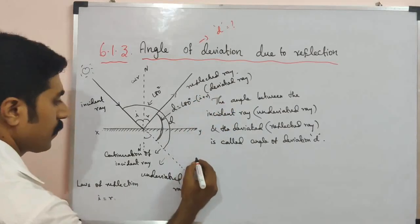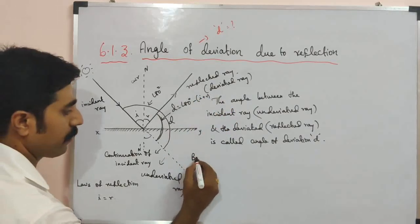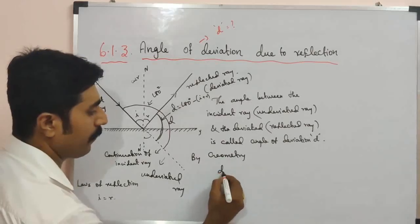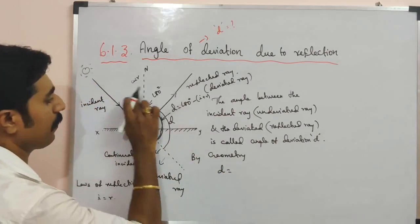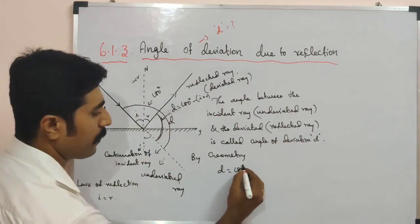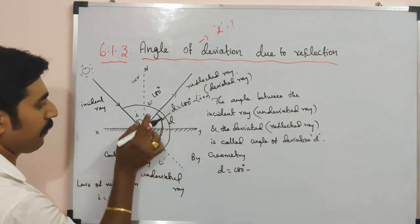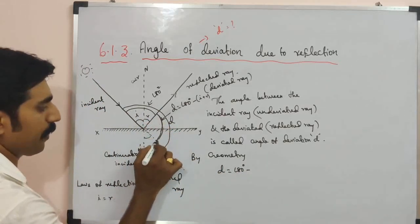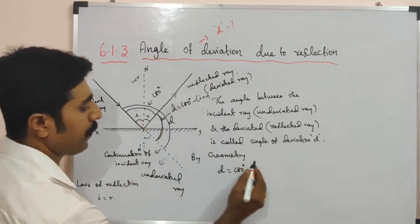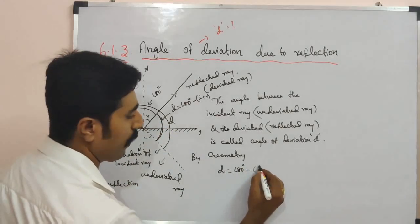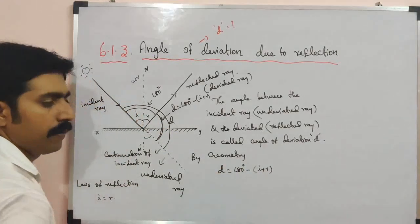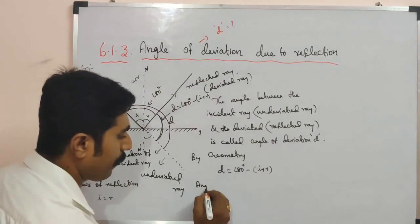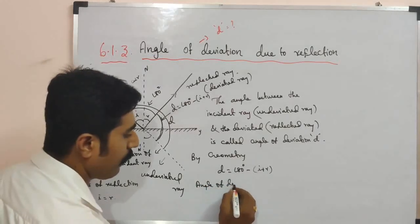By geometry, the angle of deviation D is equal to 180 degrees minus i plus r. Since i equals r, we can write the angle of deviation accordingly.